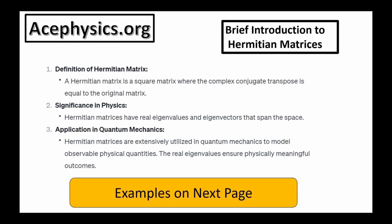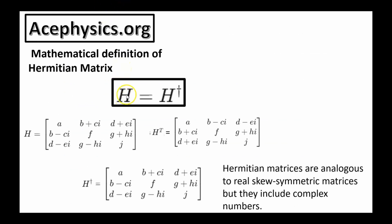A Hermitian matrix is a square matrix where the complex conjugate transpose equals the original matrix. Hermitian matrices have real eigenvalues and eigenvectors that span the space — this is the spectral theorem. For this reason, Hermitian matrices are extensively used in quantum mechanics to model observable physical quantities. They satisfy H equals H dagger, and are matrices where numbers reflected across the diagonal are complex conjugates of each other. Along the diagonal are real numbers, and the off-diagonal elements come in complex conjugate pairs.